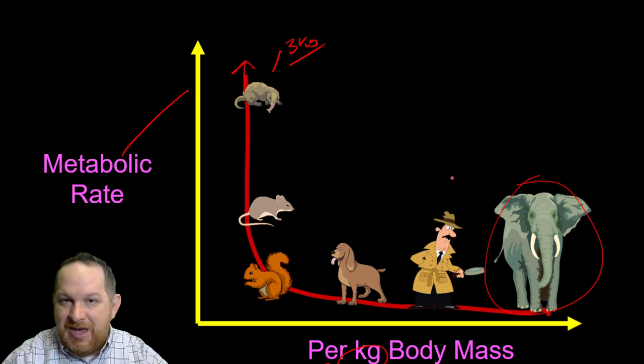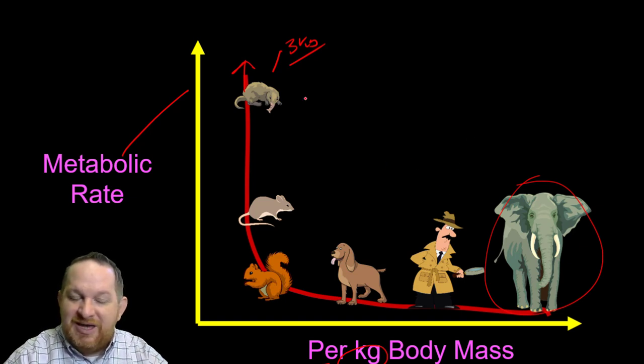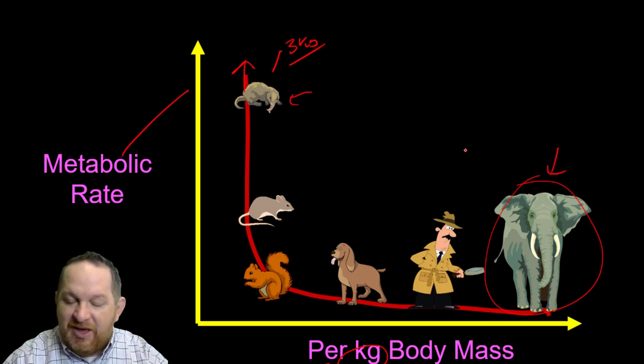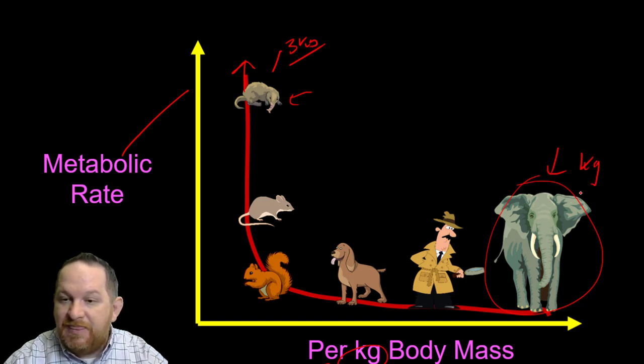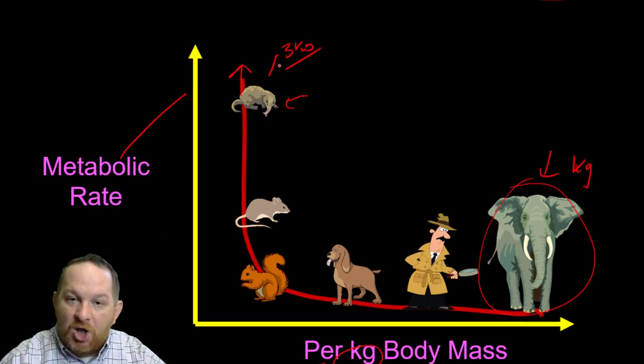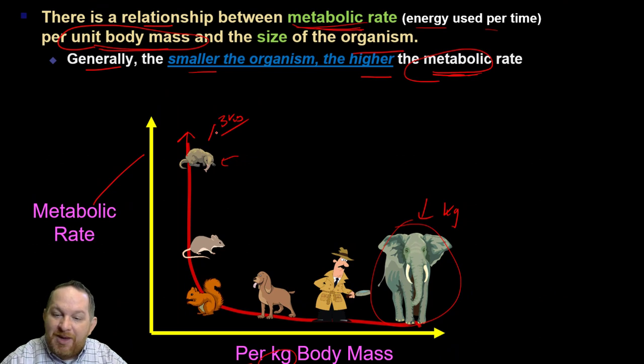Are we saying that a shrew has a higher metabolism than an elephant? Well, it's not that simple. The elephant's got a lot more mass. If you took every kilogram of the mass of an elephant, that would in general have a lower metabolic rate than the total metabolic rate per each kilogram for the shrew.